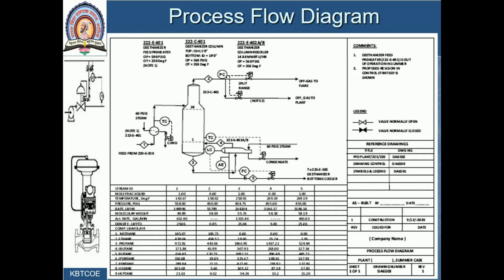So if we draw the diagram for this boiler process, what type of diagram will it be? Simply: we are getting water inside, water gets heated, and we are getting steam outside. This is what a process flow diagram is — a simple example.